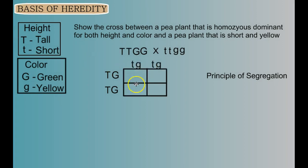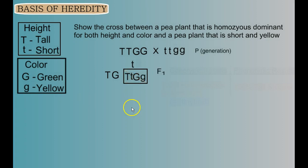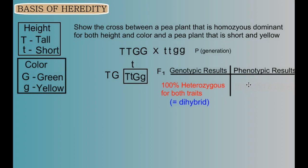When we put the gametes back together, all four boxes are identical, so we only need one. We combine TG with tg and get TtGg — but we want to organize this with the T's next to the T's and the G's next to the G's for clarity. Our F1 generation is 100% heterozygous for both traits; we can call this a dihybrid. The phenotypic result is that they'll all be tall and green.